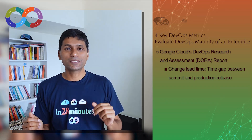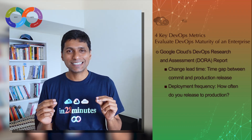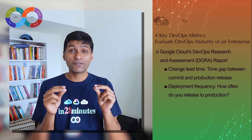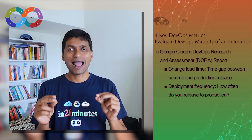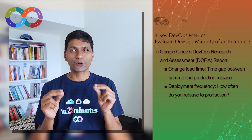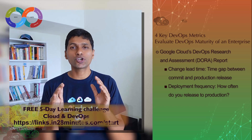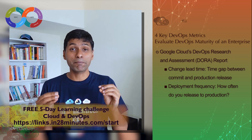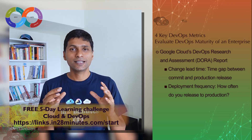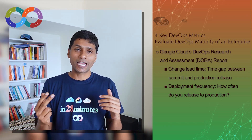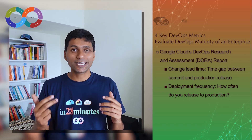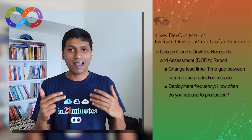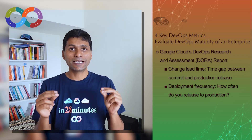The second metric is deployment frequency. This is not deployments to dev or QA — this is the deployment frequency to production. How many releases are you making to production? If you look at most mature DevOps organizations, they might even be making multiple releases every hour. So that's another metric to evaluate DevOps maturity: how many releases are you making to production every day?